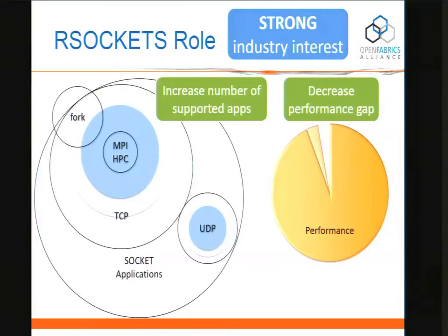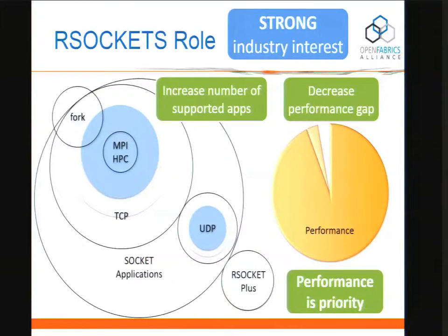My other goal is to decrease the performance gap. Generally, R sockets provides around 90-95% of the performance — basically raw performance for microbenchmarks relative to a native application. And my priority is performance. This will be a little different from, for example, SMCR, which is more focused on compatibility. I'm going to give up some compatibility in order to maintain the performance that R sockets can provide.